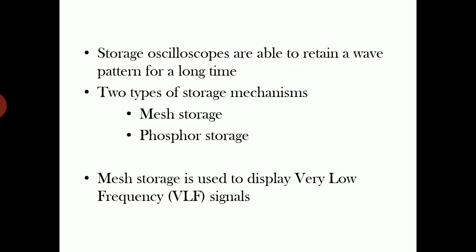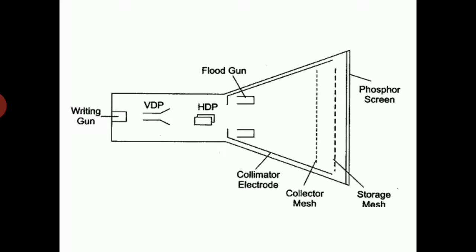The main types of storage mechanisms commonly used are mesh storage and phosphor storage. In our lesson, we will be studying about the functioning of mesh storage, which is used to display very low frequency signals. This is the schematic diagram of a storage oscilloscope. The three important additions made to a CRO to create a storage oscilloscope are a storage mesh, a collector mesh, and a flood gun.